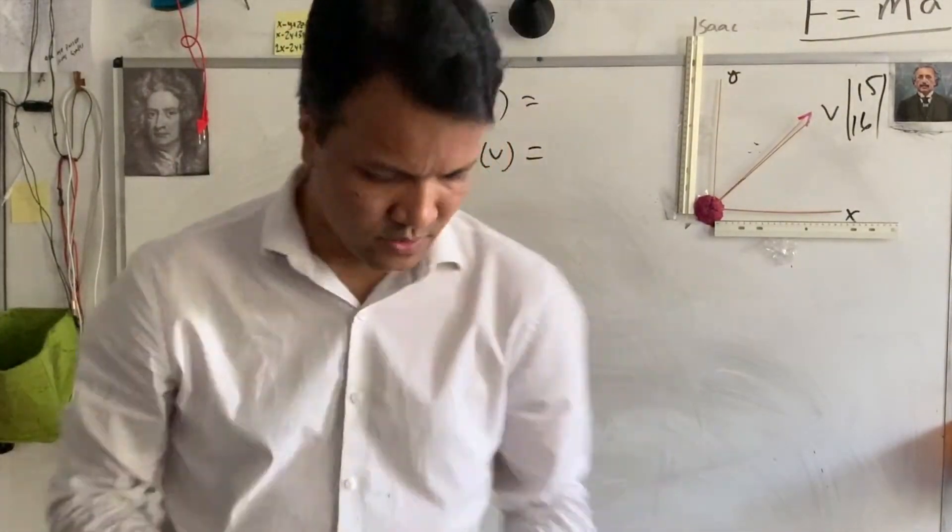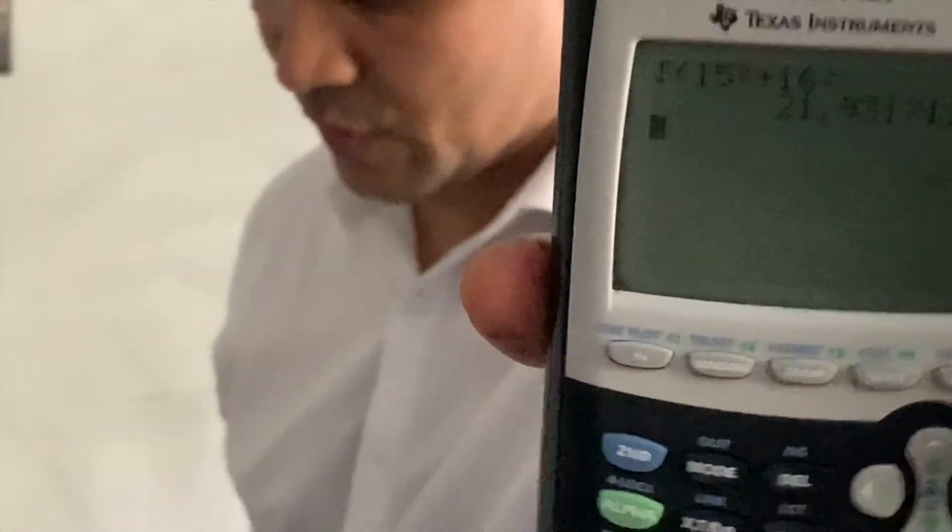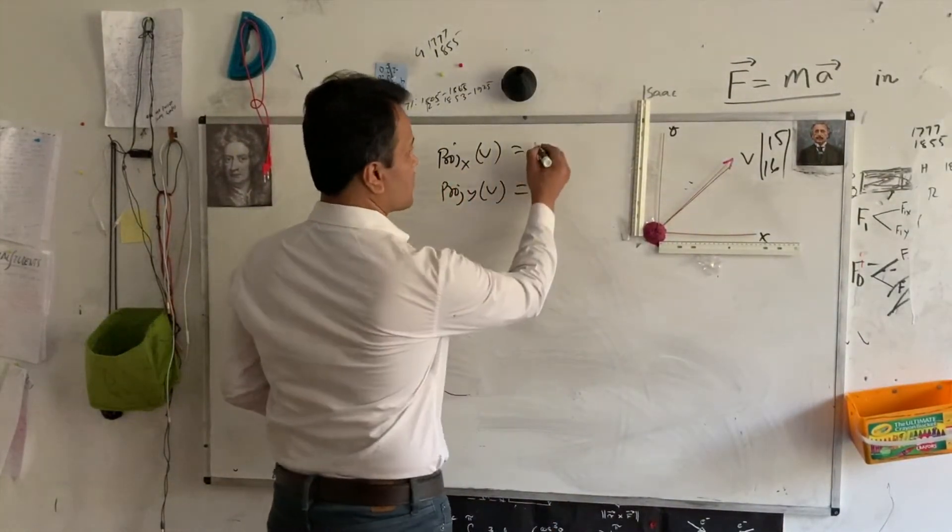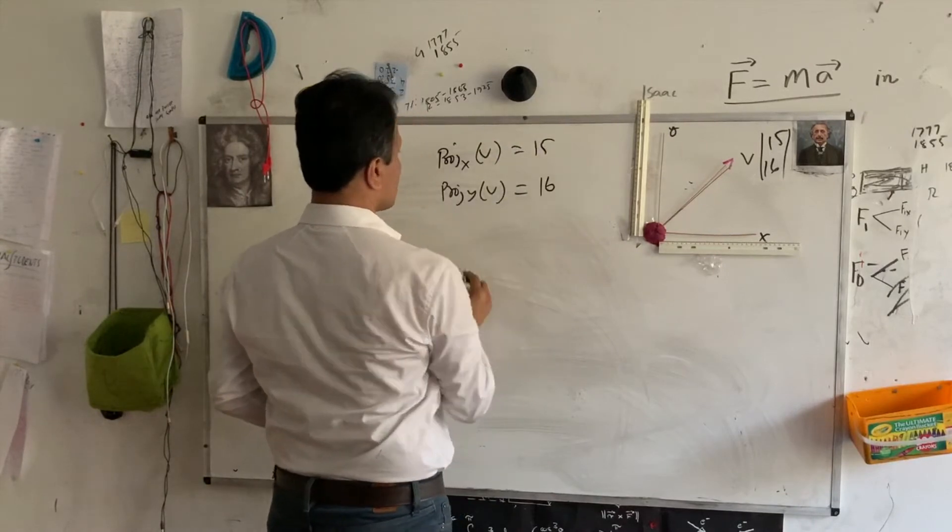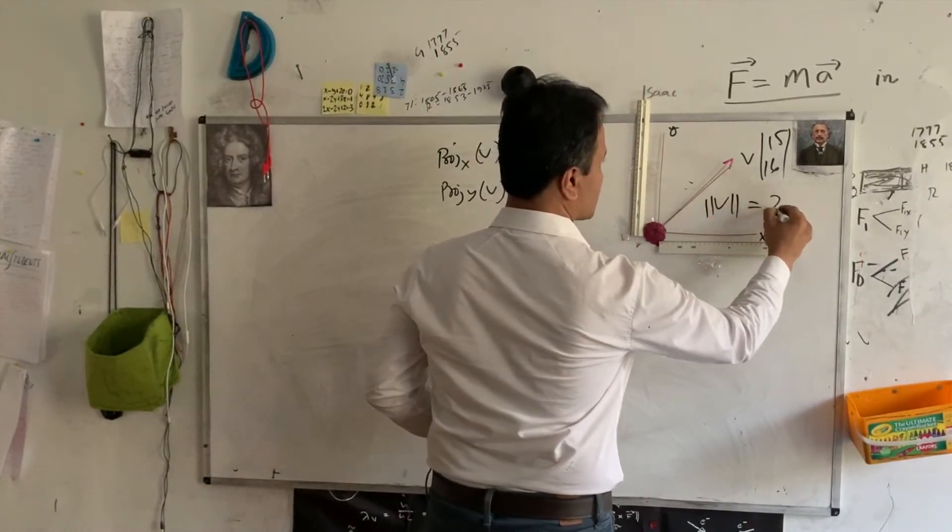So, now, if I take the calculator, it gives you exactly 22, 21.9. But, yeah, yeah, 22. So, this one was 15. This is 16. So, the distance is 22.